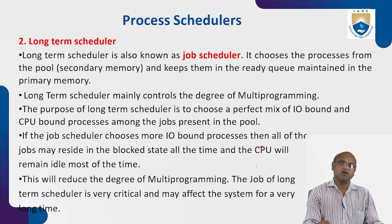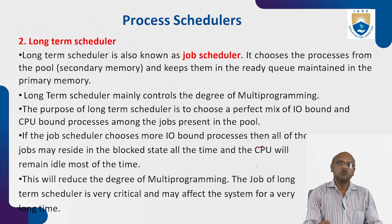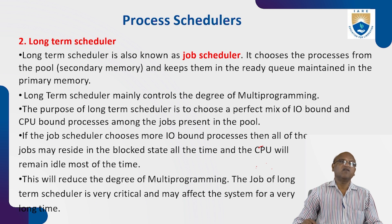There will be a number of programs available in the hard disk, and we bring them to RAM. Which program should be sent for execution is the discrimination of the CPU scheduling algorithm. The purpose of the long-term scheduler is to choose a perfect mix of I/O-bound and CPU-bound processes from the pool. If the job scheduler chooses more I/O-bound processes, the CPU will remain idle most of the time. The job of the long-term scheduler is very critical and may affect the system for a very long time.